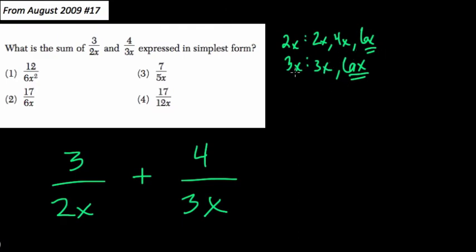So what did I have to do to get from 3x to 6x? Well, that's when I multiply by 2. What did I have to multiply 2x by to get 6x? Well, that's when I multiply by 3.